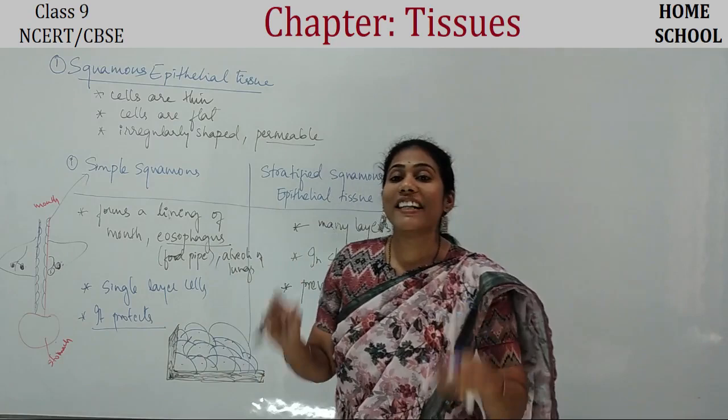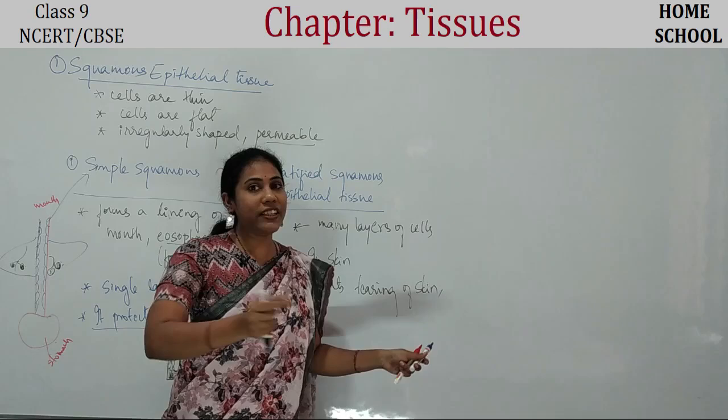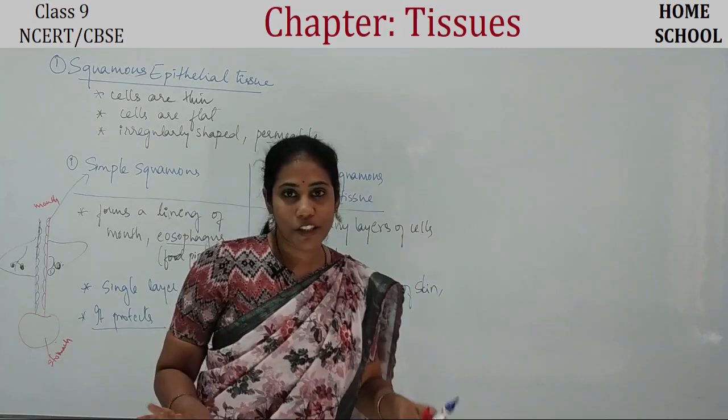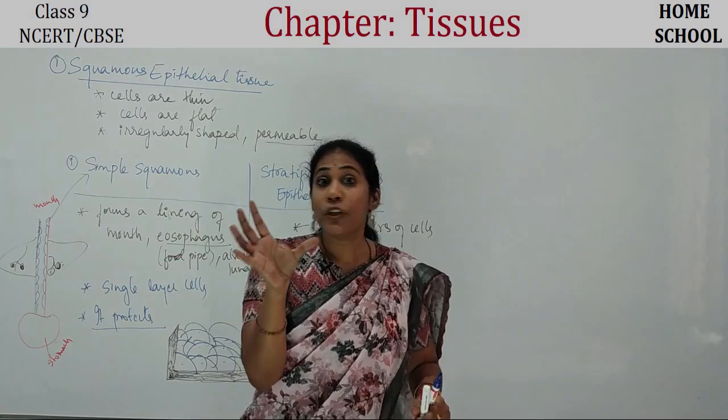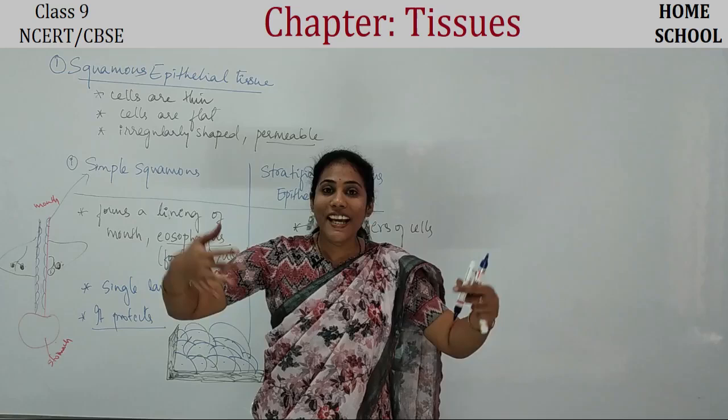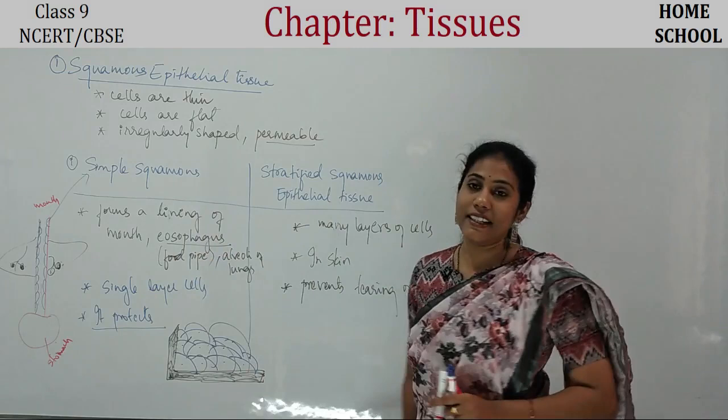I will show pictures at the end of the video. In simple squamous, only one layer of cells is present. In stratified — 'strat' meaning layers — many layers of cells are present, just like the many layers you see in pastries or cakes. Many layers of cells form stratified squamous epithelial tissue. That's all about squamous epithelial tissue.